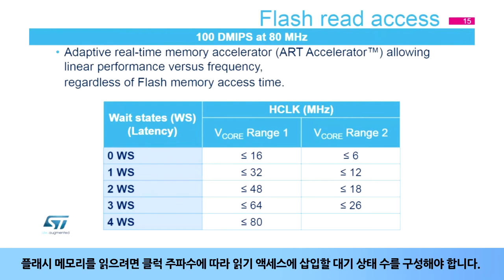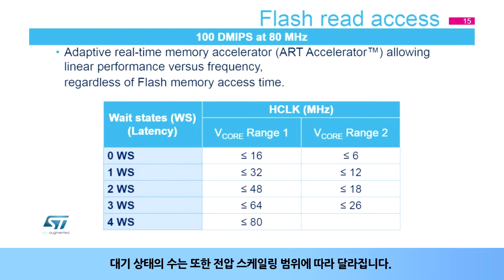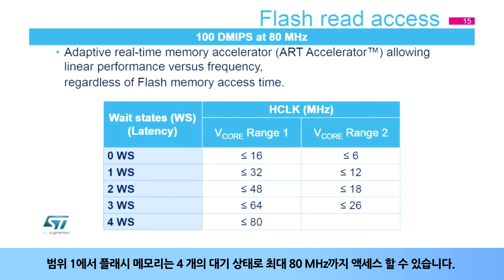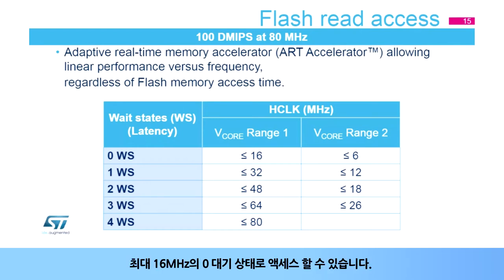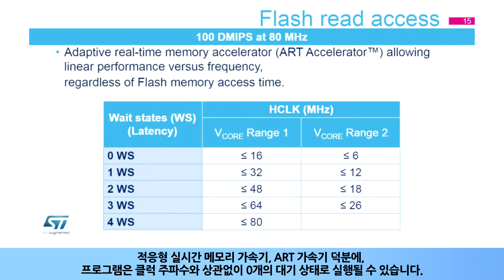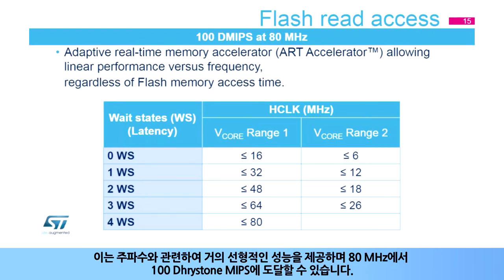In order to read the flash memory, it is required to configure the number of wait states to be inserted in a read access, depending on the clock frequency. The number of wait states also depends on the voltage scaling range. In range 1, the flash memory can be accessed up to 80 MHz with 4 wait states, and with 0 wait states up to 16 MHz. For range 2, it is up to 26 MHz with 3 wait states. Thanks to the adaptive real-time memory accelerator (ART accelerator), the program can be executed with 0 wait states independent of the clock frequency, providing almost linear performance in relation to frequency and allowing 100 Dhrystone MIPS at 80 MHz.